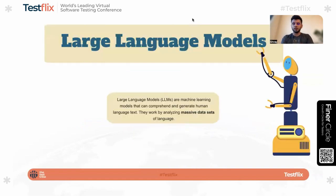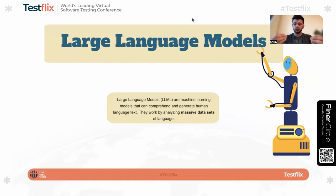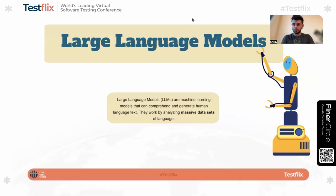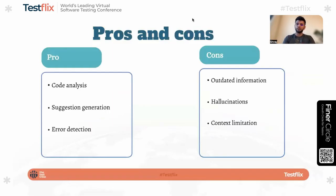Then we talk about large language models. What is a large language model? To put it in a very simple context, a large language model is nothing but a machine learning model which was trained on large amounts of data. That's it.